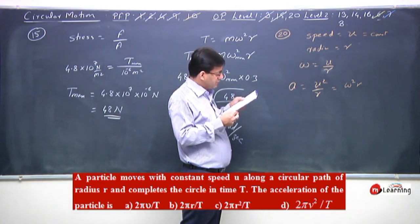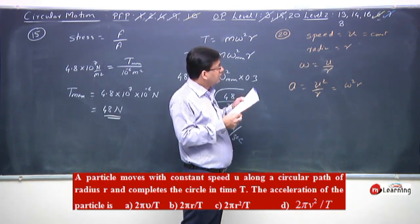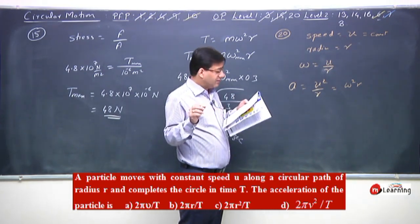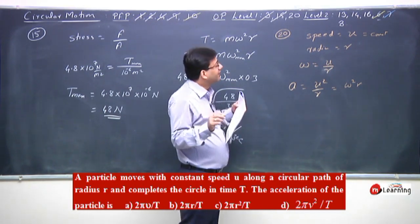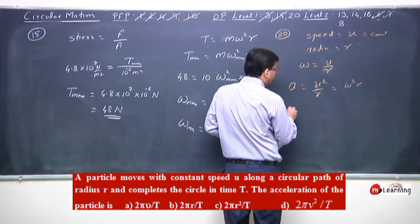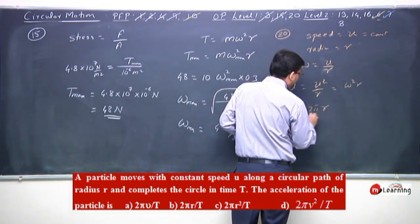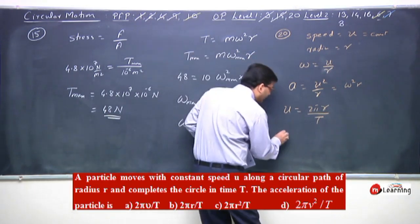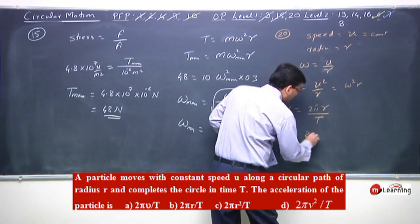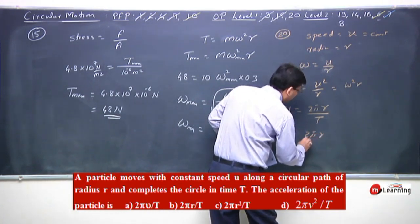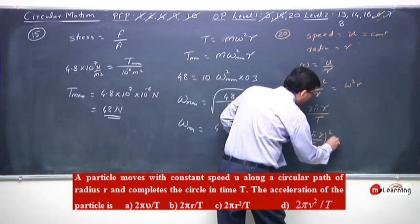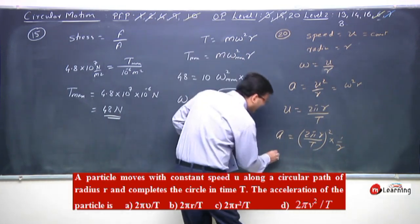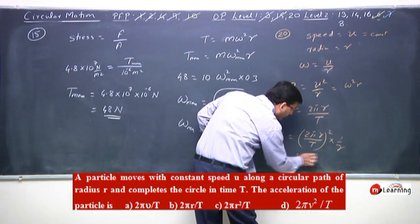Since we don't have a velocity term, just the radius and time t, we express velocity as 2πr/t. So acceleration equals (2πr/t)² × (1/r), which gives 4π²r/t².